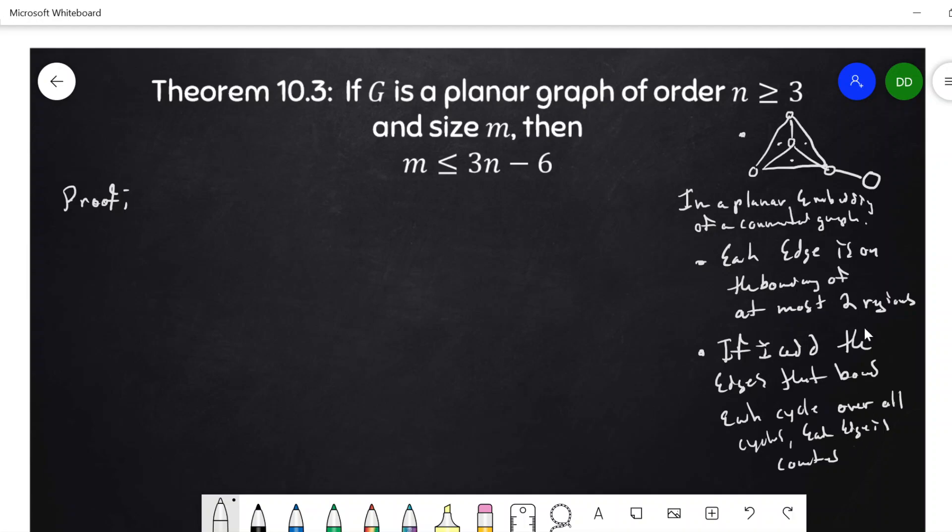Because of this, each edge is on the boundary of at most two regions. Each edge is counted at most twice. So this is a consequence. So this is the idea.